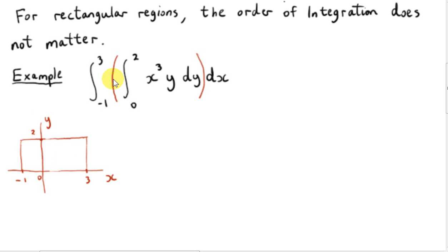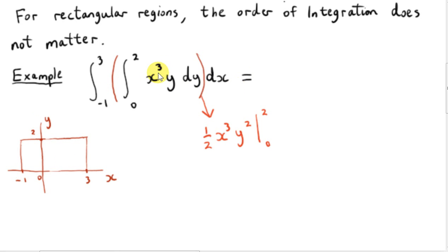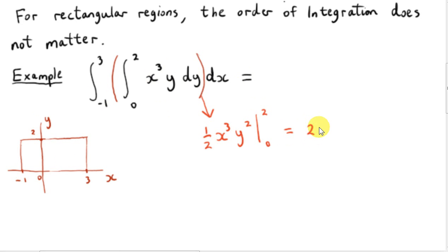Since the sides of this rectangle are parallel to the x and y axes, we should be able to switch the order of integration. Let's evaluate the integral in the order shown first. We integrate x cubed y with respect to y, treating x cubed as a constant. We have y to the power of 1, and integrating gives us a half y squared, so we end up with a half x cubed y squared. Plugging in y equals 2, we get 2 squared as 4, giving us 4 halves x cubed, which is 2x cubed.